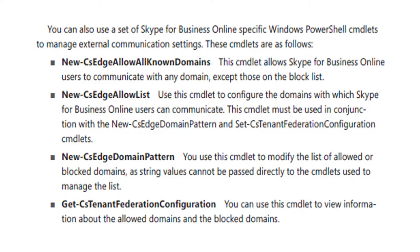New-CS Edge Domain Pattern. You can use this cmdlet to modify the list of allowed or blocked domains, as the string values cannot be passed directly to the command list used to manage the list. And finally, Get-CS Tenant Federation Configuration is used to view information about the allowed domains and the blocked domains.